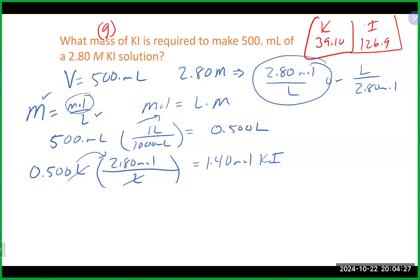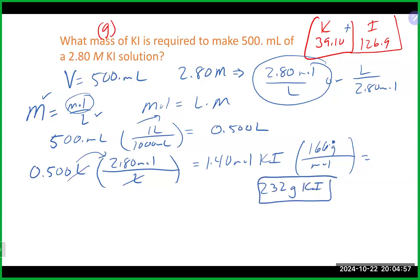Now convert moles to grams. Molar mass of KI = 39.10 + 126.9 = 166 grams per mole. So 1.4 moles × 166 g/mol ≈ 232 grams of KI. In practice, you'd weigh out 232 grams of potassium iodide, dissolve it in deionized water, and bring the total volume up to 500 milliliters — giving you a 2.80 M KI solution.